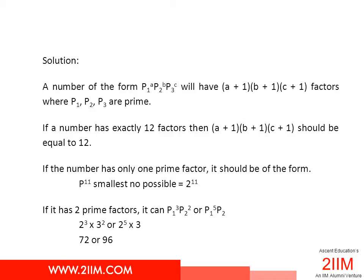We obviously allot the higher powers to the smaller prime because we're looking to find the smallest number which has exactly 12 factors. This way we get two choices: 72 or 96.